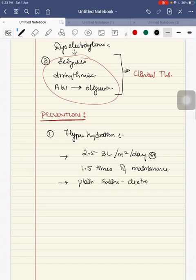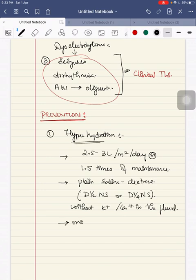This should be carried out in a plain saline with dextrose containing solution, that is D5 NS. It should be without potassium and calcium in the fluid. While giving hyperhydration you have to monitor the urine output.